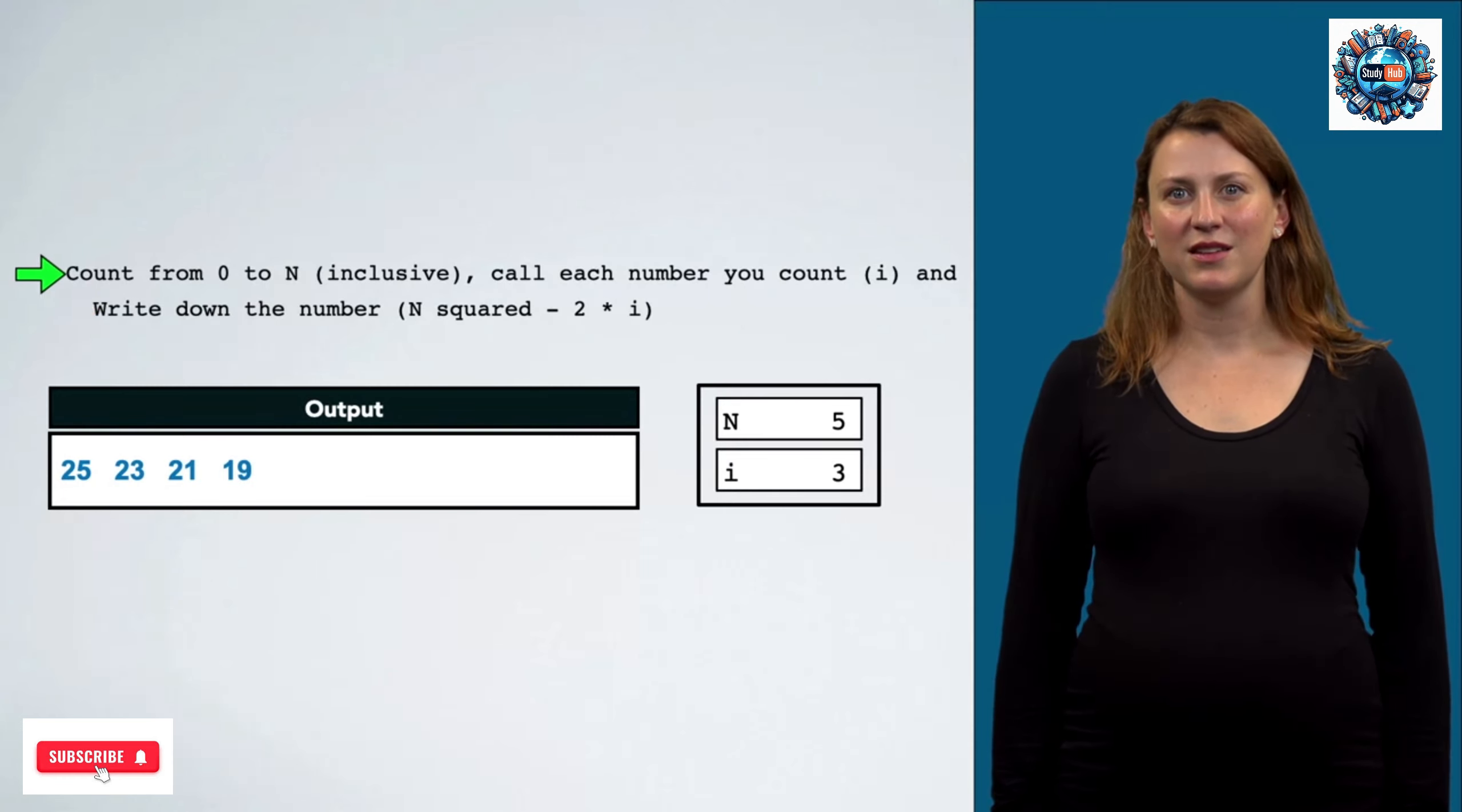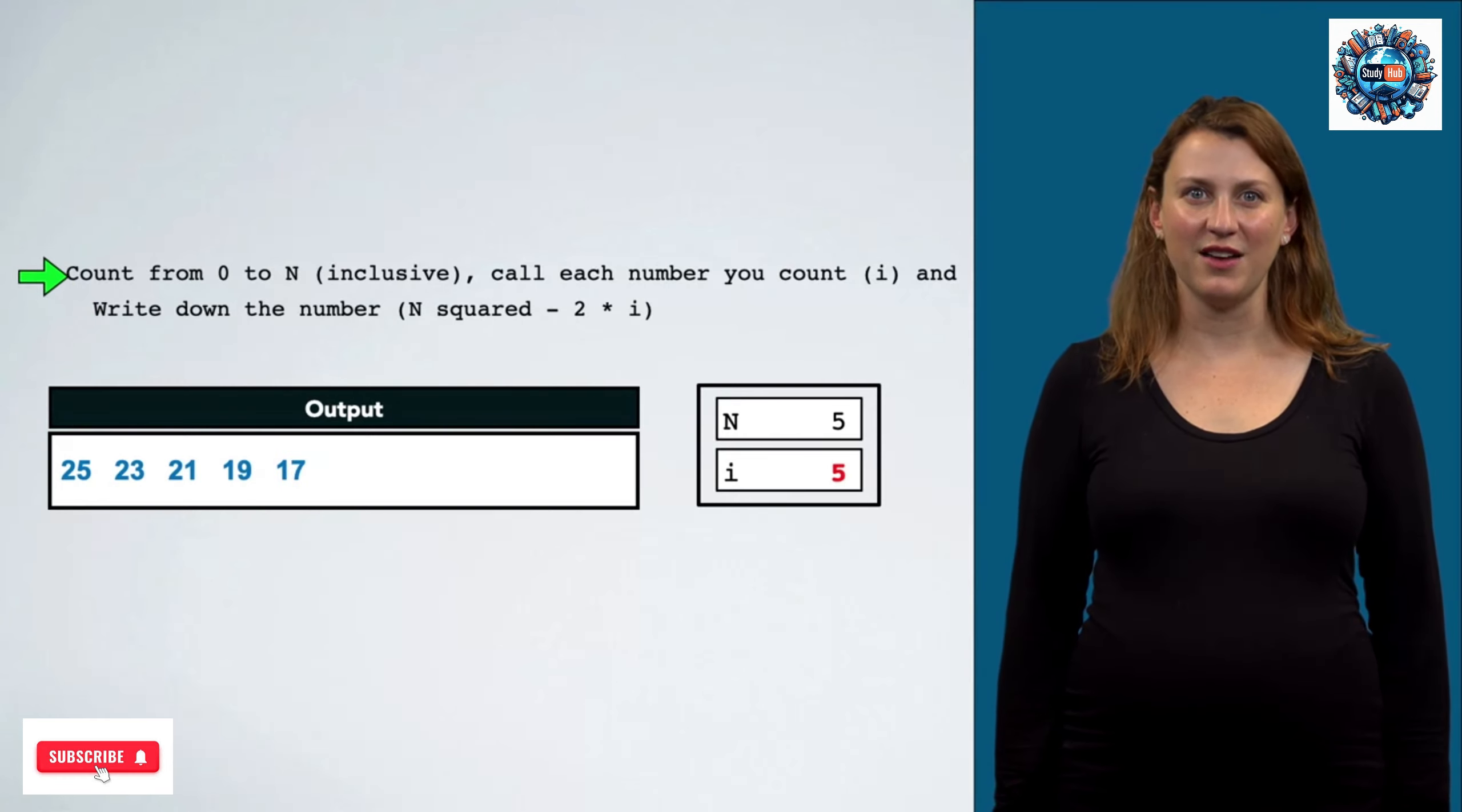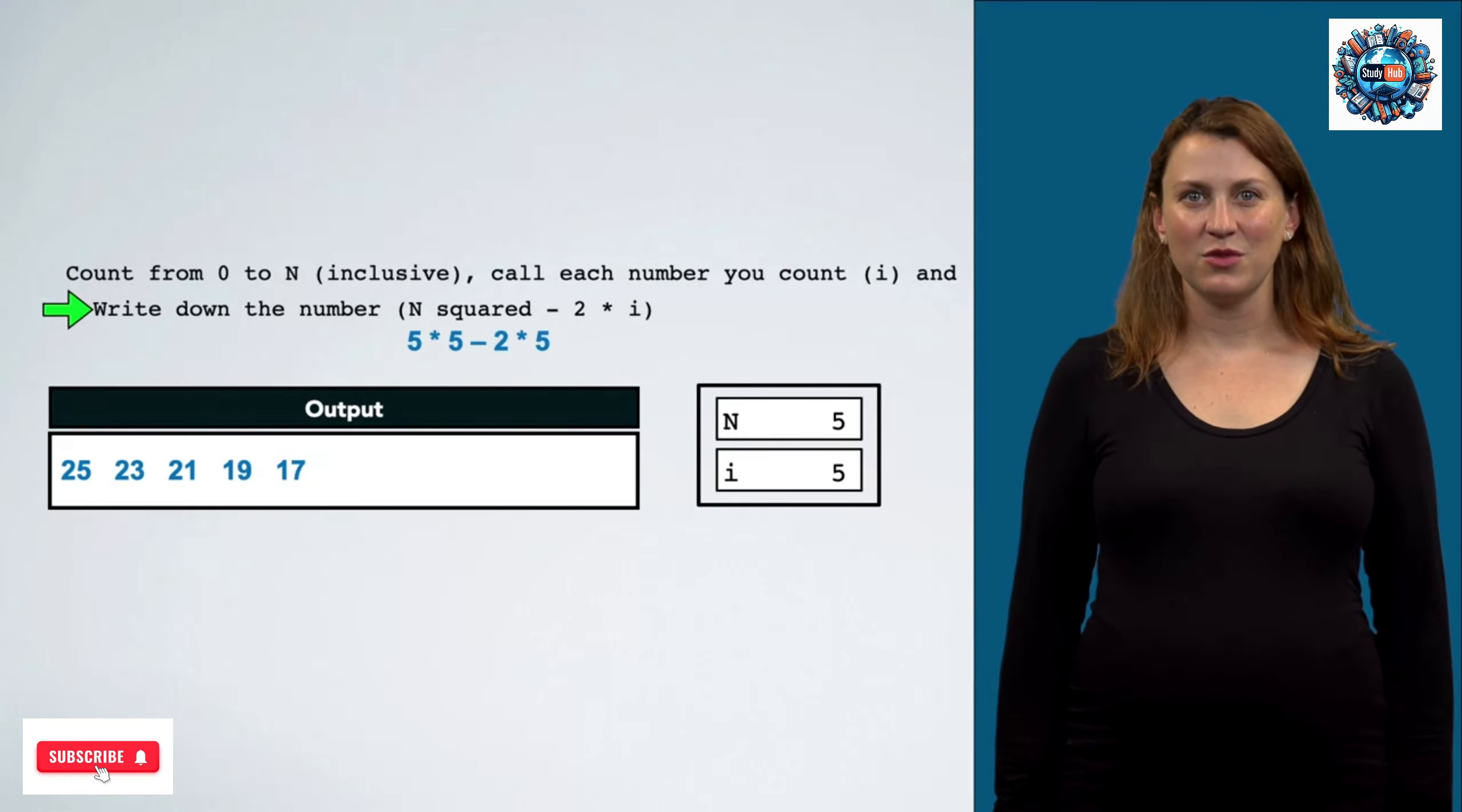And we're going to keep doing this. For i having the value 4, which is 17. For i equals 5, which is 15.